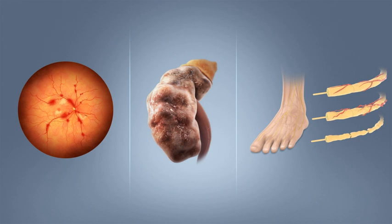Gestational diabetes is the third main form, and occurs when pregnant women without a previous history of diabetes develop high blood sugar levels. Prevention and treatment involve maintaining a healthy diet, regular physical exercise, a normal body weight, and avoiding use of tobacco.